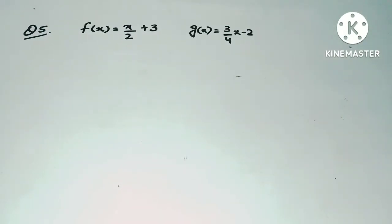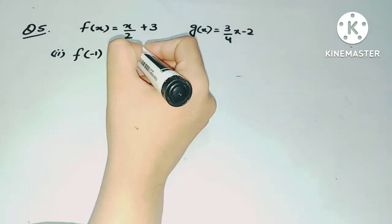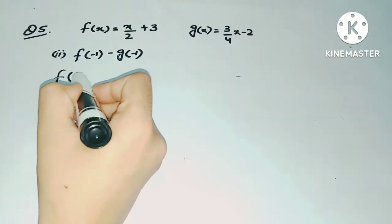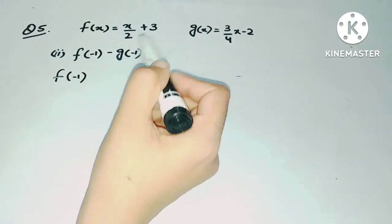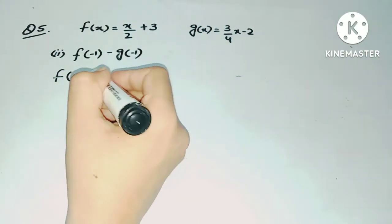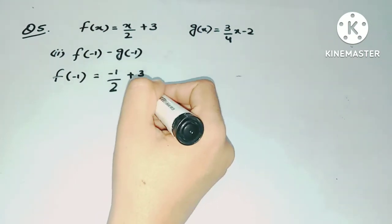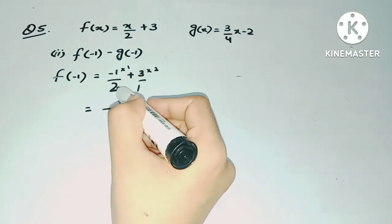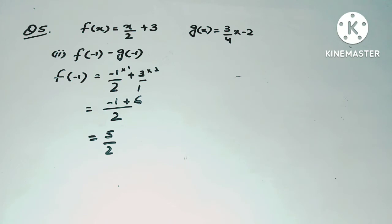Moving to Part 2: f(-1) - g(-1). First find f(-1) by taking the f(x) function, x/2 + 3, and substituting -1 for x. This gives -1/2 + 3. Taking LCM of 2: (-1 + 6)/2 = 5/2. So f(-1) = 5/2.